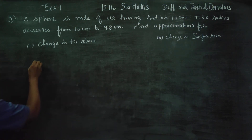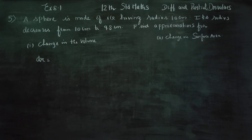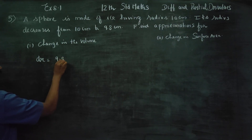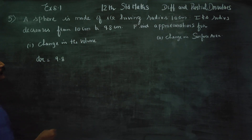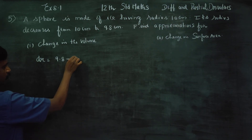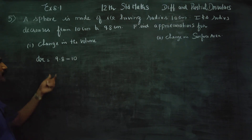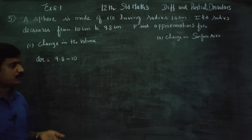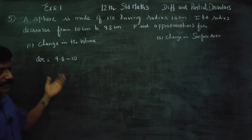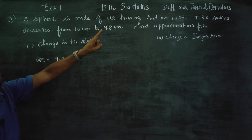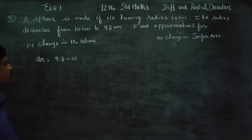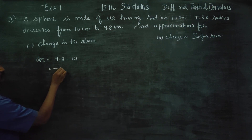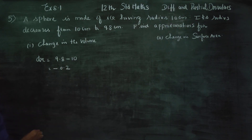First, I am going to find DR — DR is the change in radius. The existing radius is 9.8, but the original one is 10. So DR equals 9.8 minus 10, which gives minus 0.2. There is a decrease in radius.